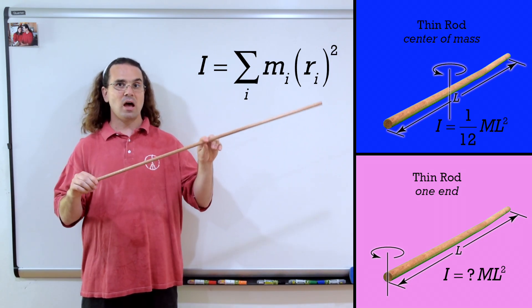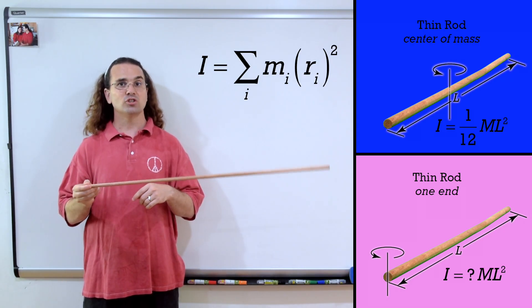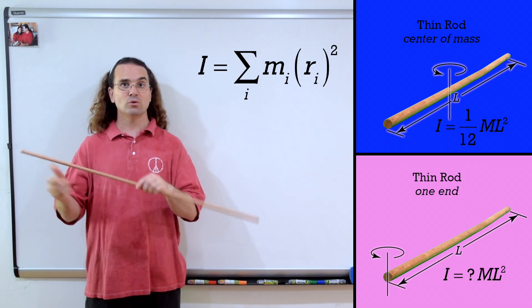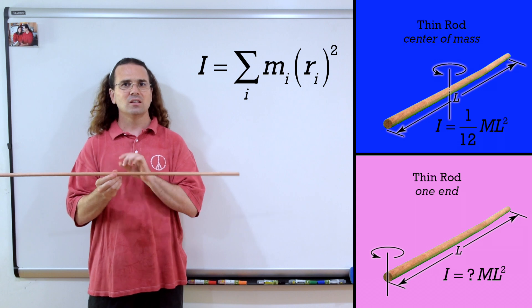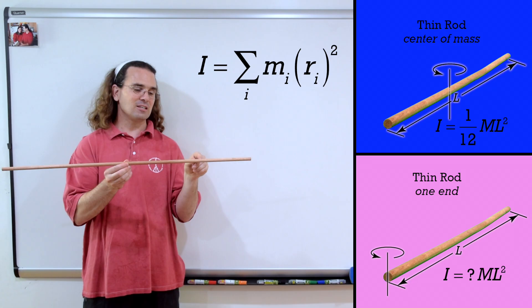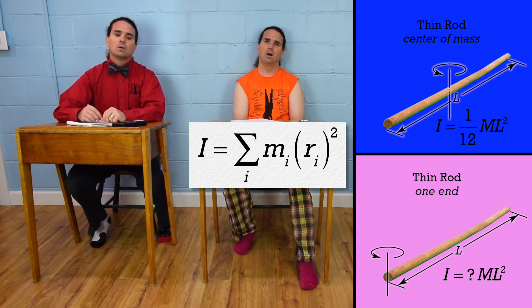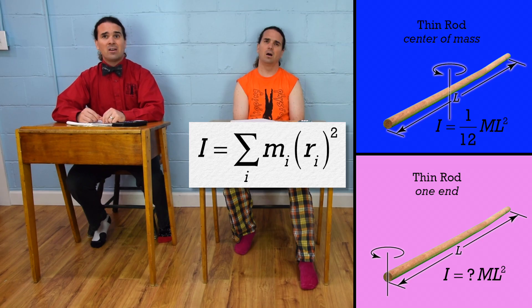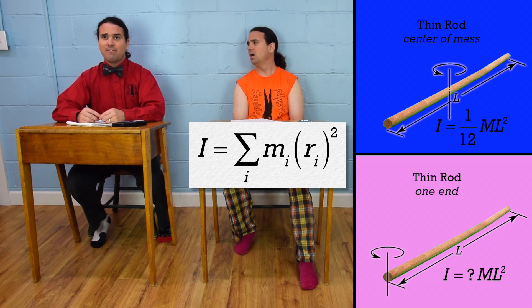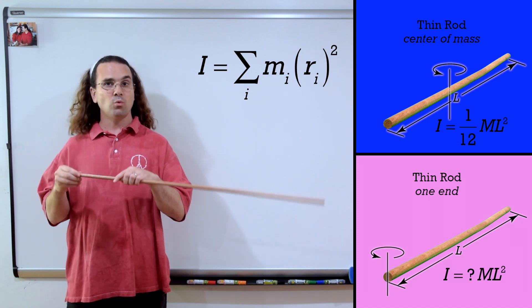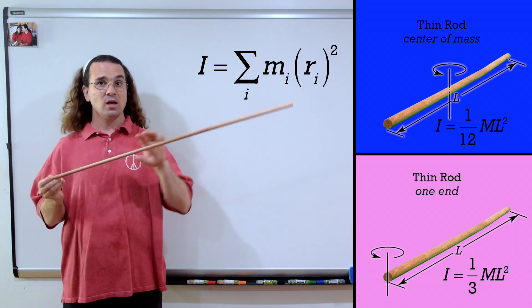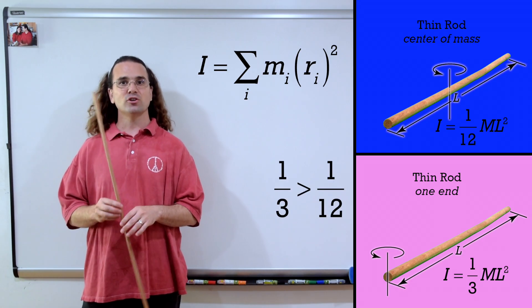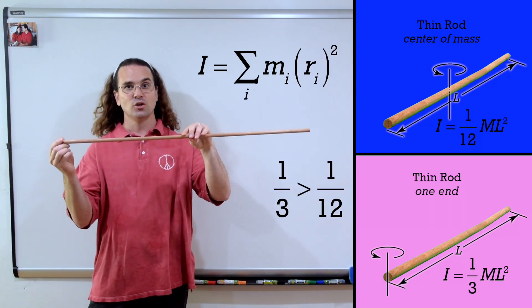Billy, if we instead rotate the rod about one of its ends, would you expect the moment of inertia to increase, decrease, or stay the same relative to rotating the rod about its center of mass? Consider small pieces which make up the rod and how those are affected by the moment of inertia of a system of particles equation. Well, moment of inertia is proportional to the square of the distance each piece is from the axis of rotation. So when we move the axis of rotation to the end, some of the mass is now farther from the axis, therefore the moment of inertia should go up. Correct — the moment of inertia of a thin rod about one end is one-third ML². One-third is greater than one-twelfth, so the moment of inertia increases when we move the axis from the center of mass to the end.